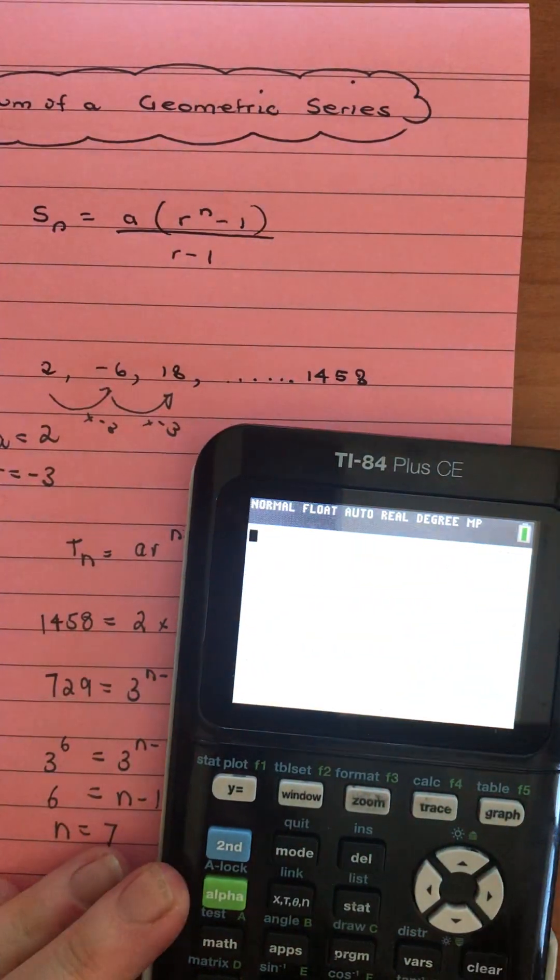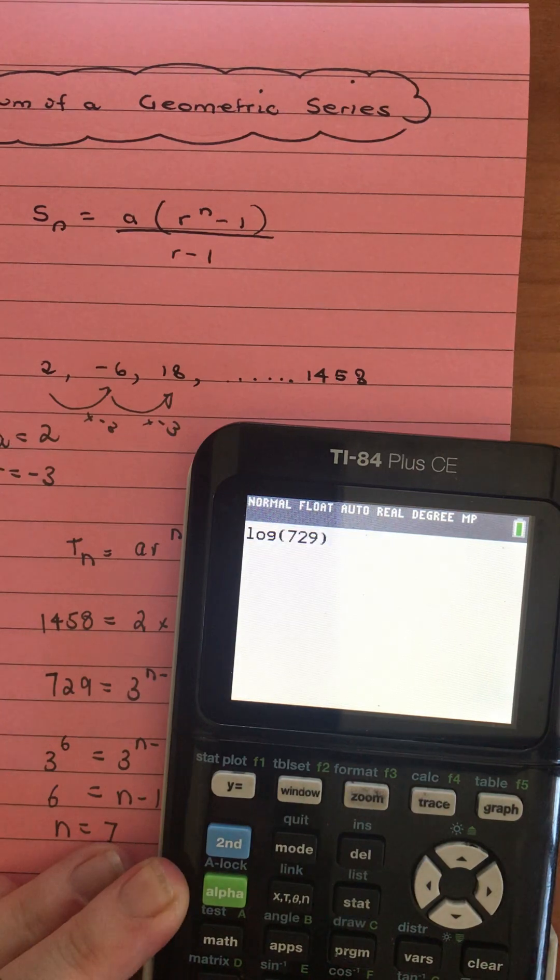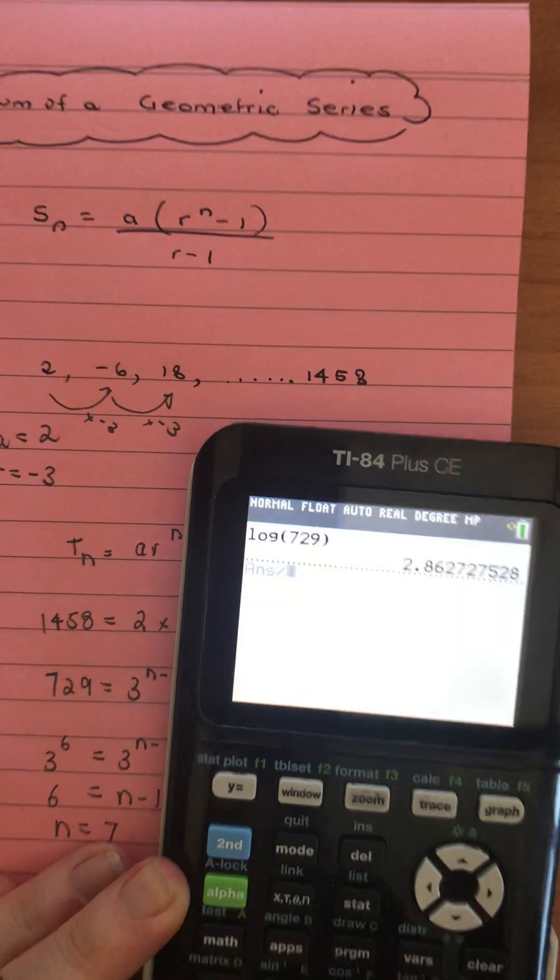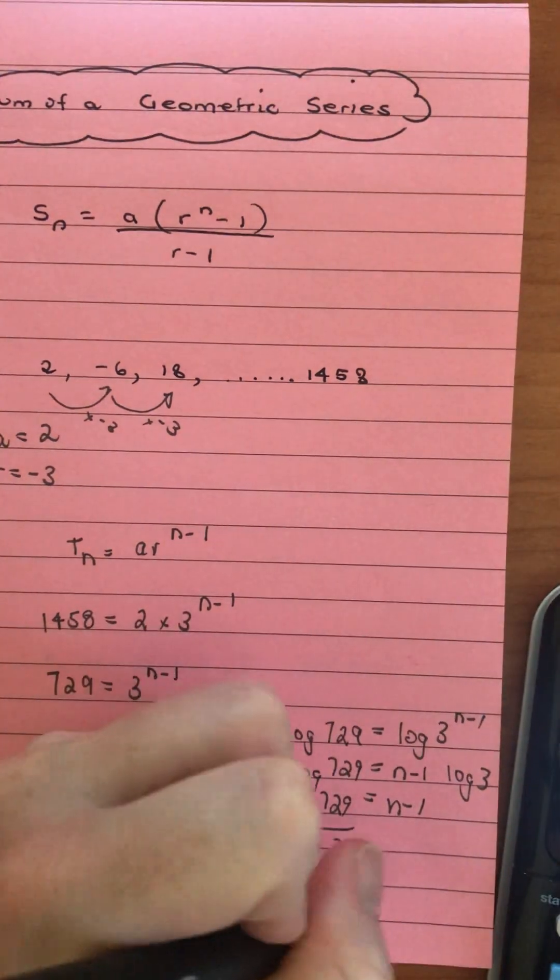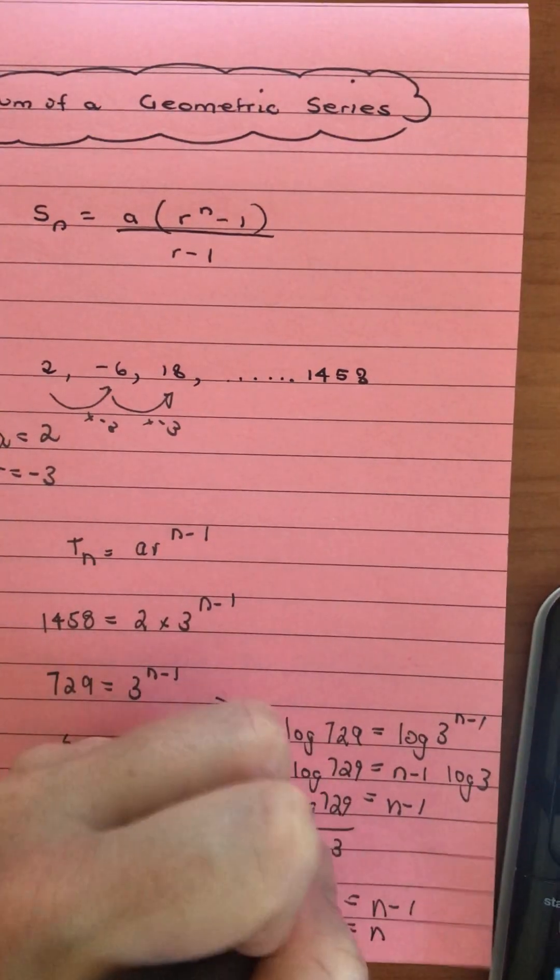So then when we grab our calculator, log of 729 divided by log of 3 gives us 6, which is what we found out over here as well. So 6 is n-1, so n must be 7.